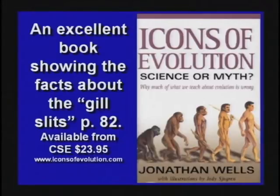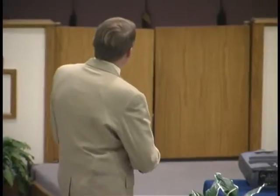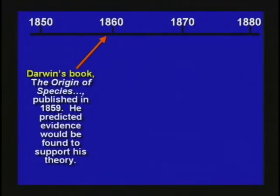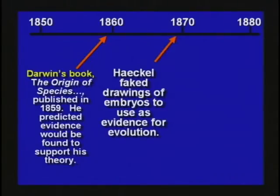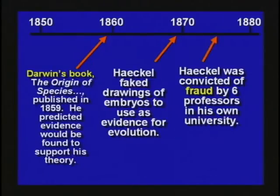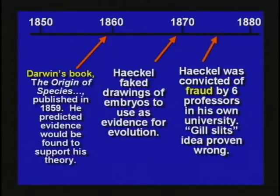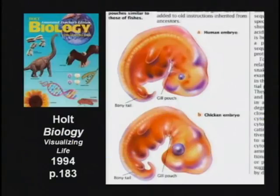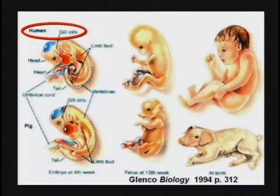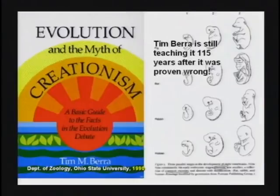More about the gill slits in this book, Icons of Evolution. Darwin's theory — his book came out 1859, he predicted they would find evidence. 1869, Haeckel faked the drawings. 1875, it was proven wrong. But it's still in textbooks used all over the planet. A 2004 textbook still has it. A 2005 textbook still has it.